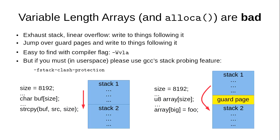One of the first things is variable length arrays and alloca — effectively the same thing: dynamic allocation of stack space. If you have an unbounded VLA or don't check lengths, you may exhaust the stack and start writing over whatever followed it. You can stop linear overflow by adding a guard page, but if it's an array you can jump over the guard page. Stack cookies don't help here because as the attacker you're controlling the stack size and the cookie comes after.